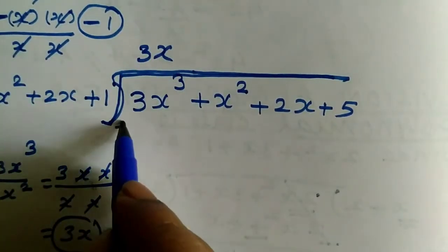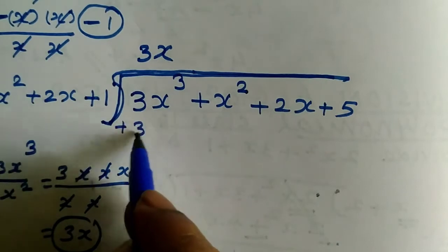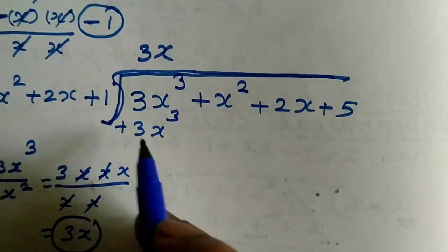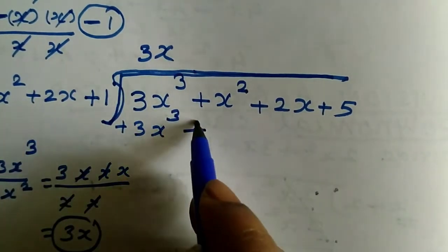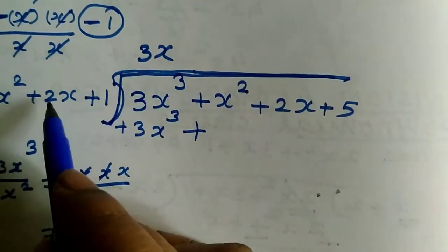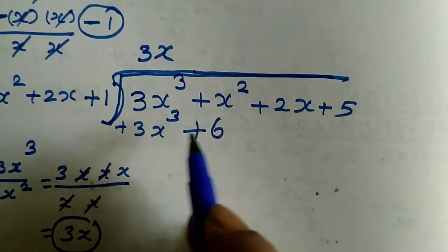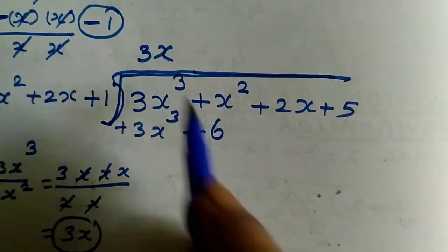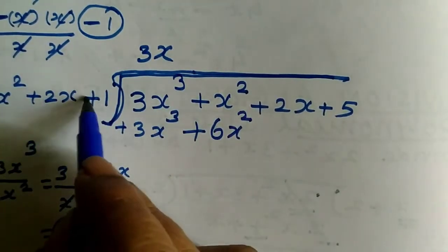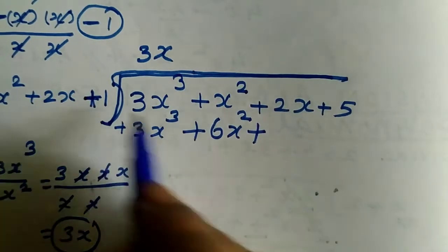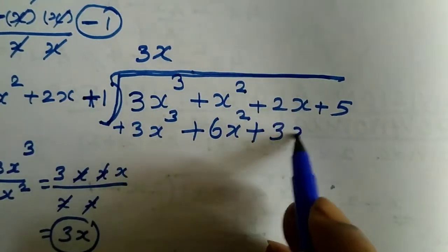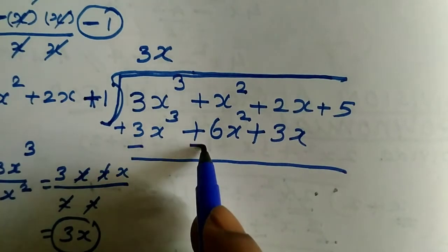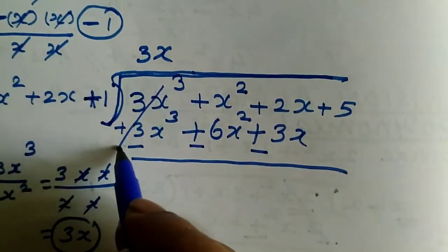Multiply g(x) by 3x. 3x times x² equals 3x³, plus times plus is plus. 3 times 2 is 6, x times x is x², giving 6x². Plus times plus is plus. 1 times 3 is 3, times x gives 3x. Now change the sign.